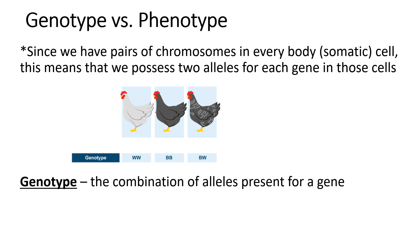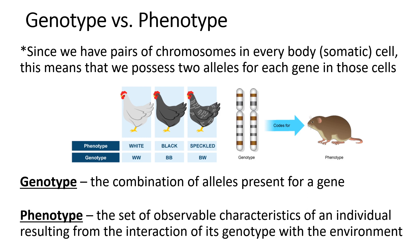In this example, we have a W allele for white feathers and a B allele for black feathers. WW is one genotype, BB is another, and BW is the third possibility. Depending on that genotype and other factors including the environment, observable characteristics can develop — those are called your phenotype. Phenotype is what you can see, the effect of the genotype. The phenotype is the effect of the genotype plus the environment.